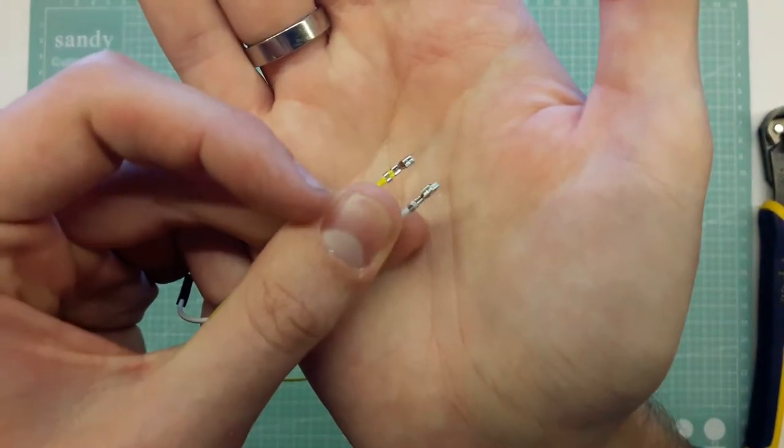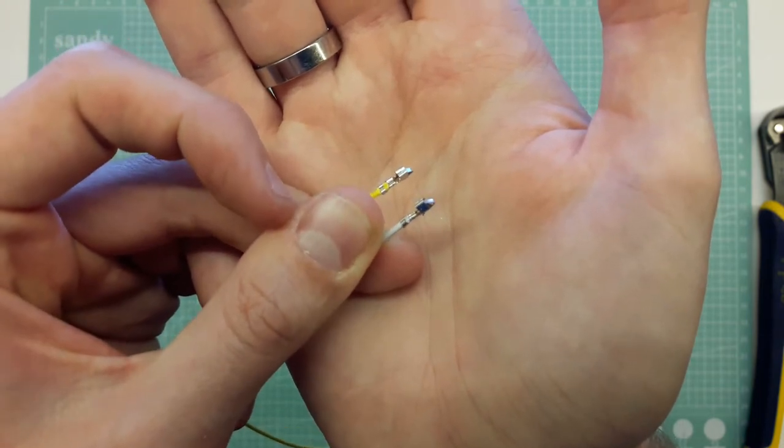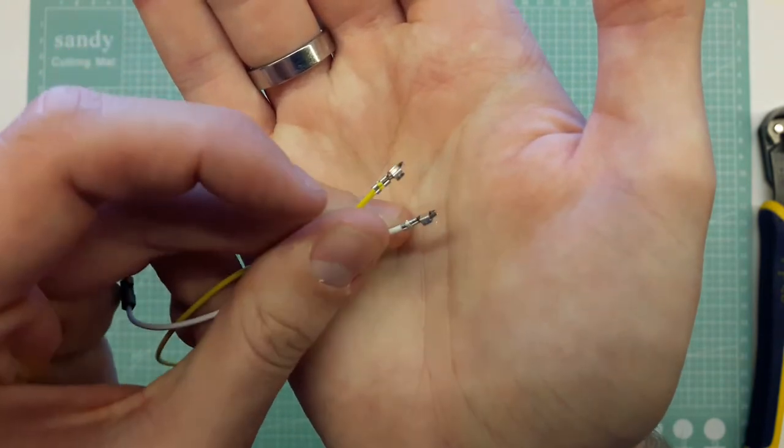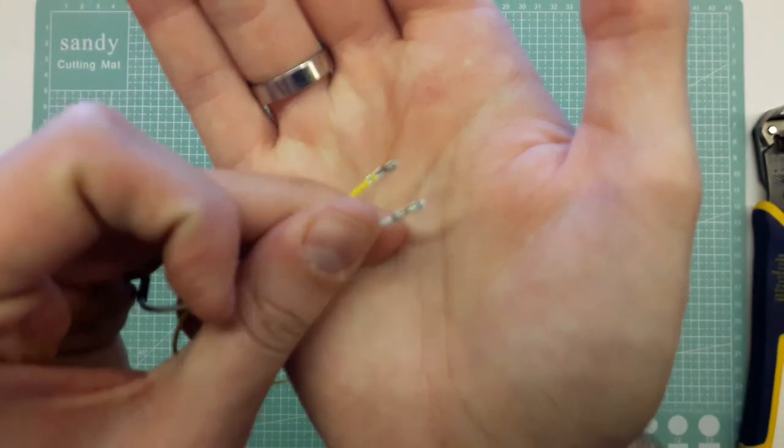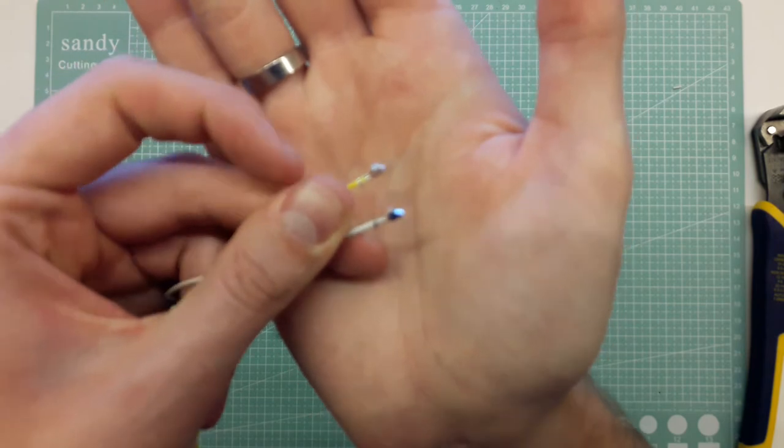And compare the crimps side by side. They look about the same but as you can see the yellow one with the automatic one is more flattened out, it's wider so they'll probably not fit in the connector.